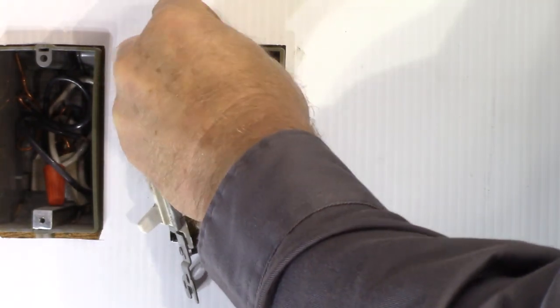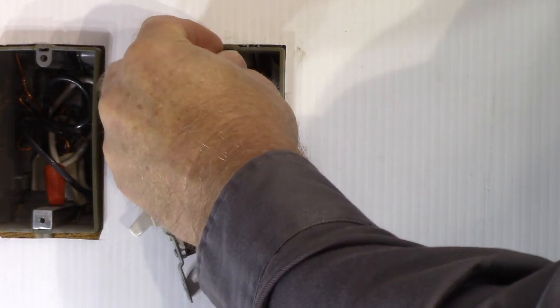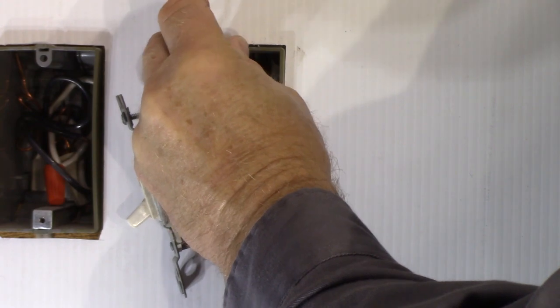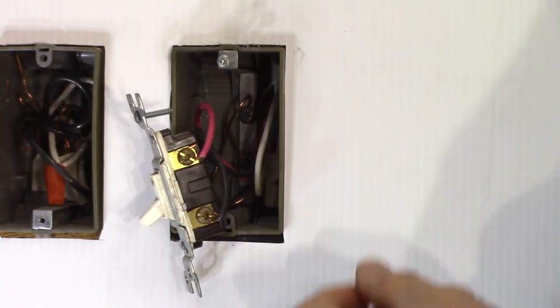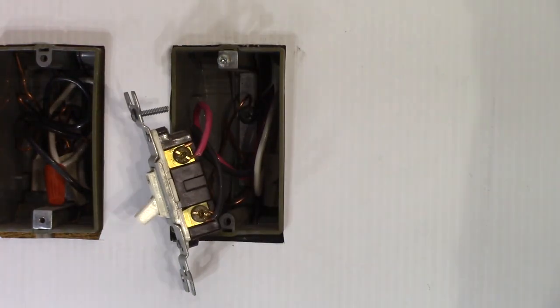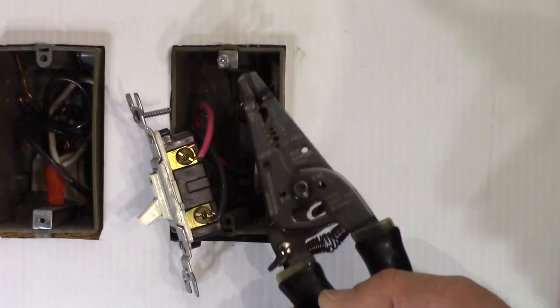And now that box screw, that device screw will thread in quite easily. I'm just doing it by hand here. Threads in easily without any trouble. So you got that Cletus.